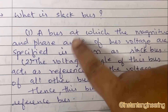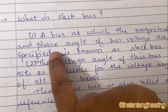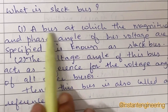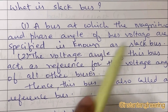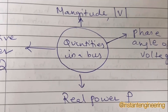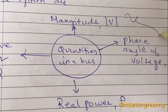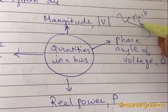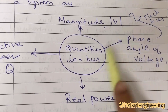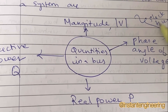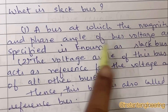What is meant by slack bus? This will be asked in questions and in objective parts as well. A bus at which the magnitude and phase angle of a bus voltage are specified is known as a slack bus. If the magnitude as well as the phase angle are specified, then it is called a slack bus.